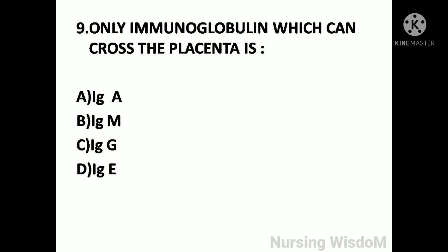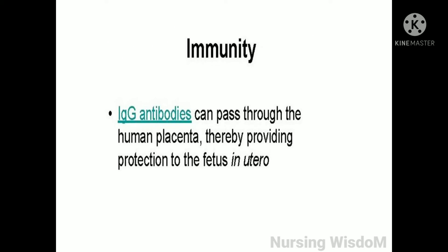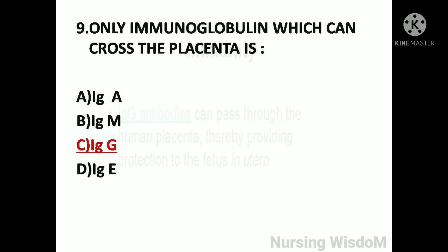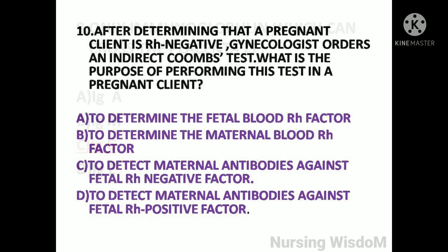Next question: The only immunoglobulin which can cross the placenta is — option A: IgA; option B: IgM; option C: IgG; option D: IgE. IgG antibodies can pass through the human placenta, thereby providing protection to the fetus in utero. So here the answer is option C, IgG.